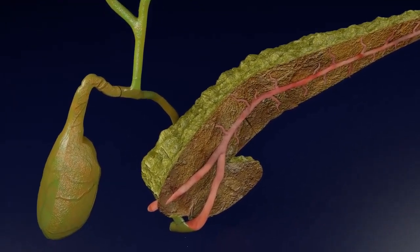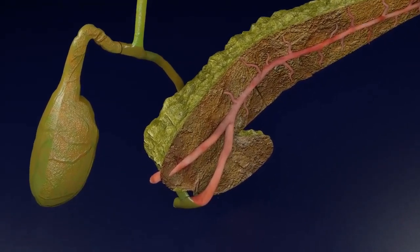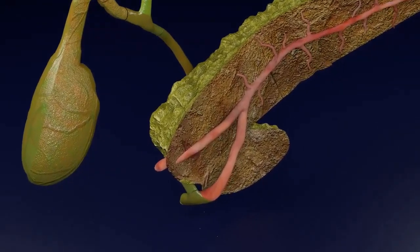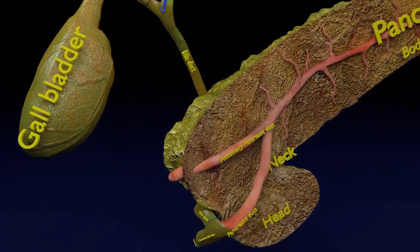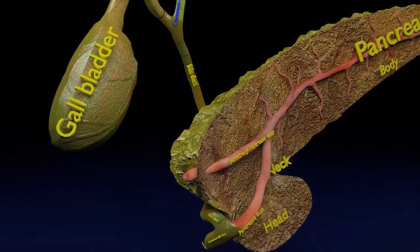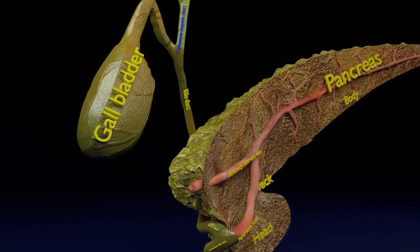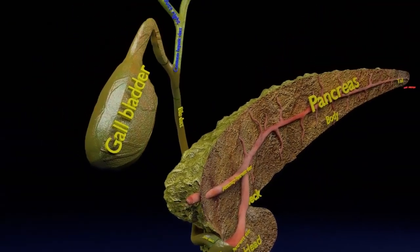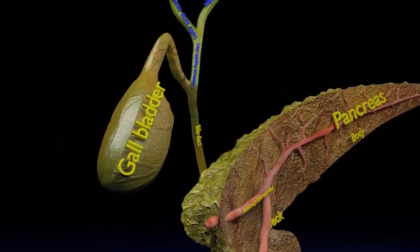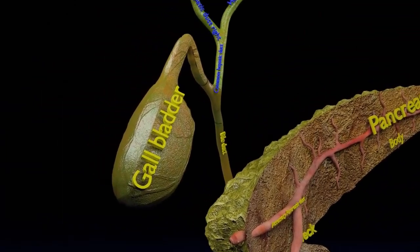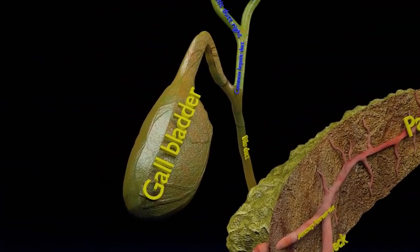You are able to see the pancreas with its body, neck, and head along with the gallbladder with intra-hepatic and extra-hepatic portions of the biliary tract. In humans,